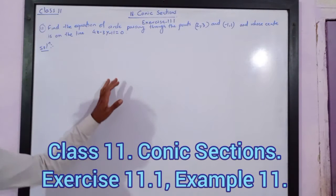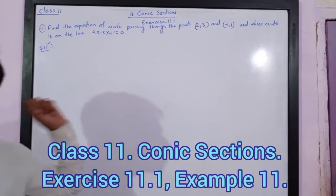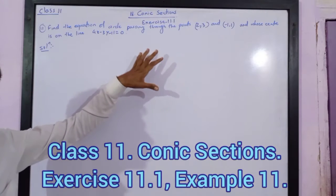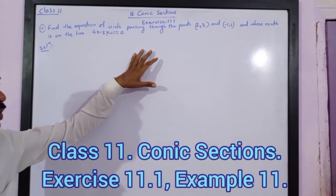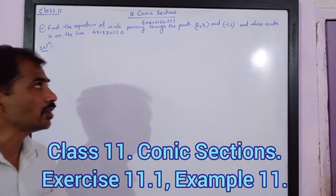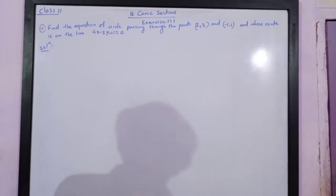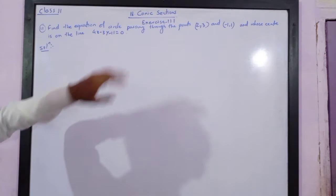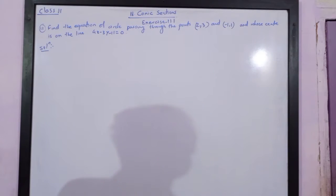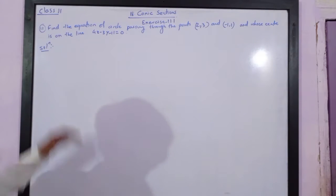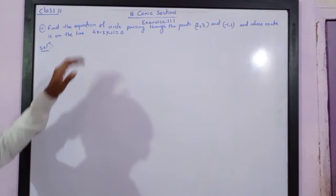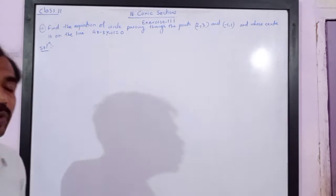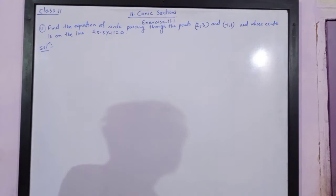Dear friends, this problem is just like an earlier problem. Try to solve it on your own and check whether your answer is correct or not. Find the equation of the circle passing through the points (2, 3) and (-1, 1), and whose center is on the line 4x minus 3y minus 11 is equal to 0.